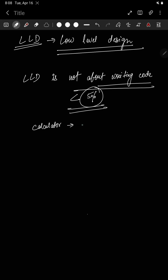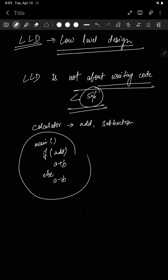You could write a main function that says: if operation is add, return a plus b, else a minus b. But is this good code? No. First, it's not modular. Second, what if I later tell you to add multiplication? You'd modify it again — else if subtract, else if multiply — and this can keep growing: divide, power, square root, cube root, logarithm, and so on.